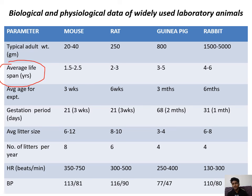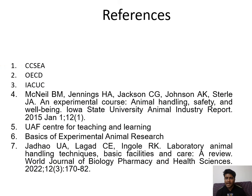C57 mice are most widely used for cancer studies and carcinogenicity testing. You also need to know certain physiological parameters like heart rate and blood pressure, as these may help in your research. The references for this presentation are listed, and you can look at those sites and papers for more details on animal experimentation and animal handling.